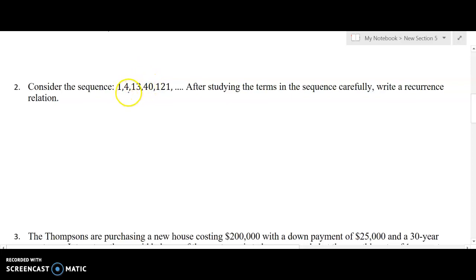But I do see that if I multiply the previous term by 3 and add 1, I'm going to get the next term in the sequence. So 1 times 3 is 3 plus 1 is 4. 4 times 3 is 12 plus 1 is 13. 13 times 3 is 39 plus 1 is 40. So I'm seeing that to get the next term in the sequence, I have to triple the previous term in the sequence and add 1 to it in order to get the next term.